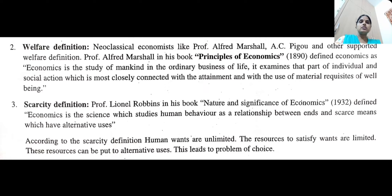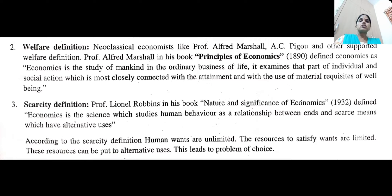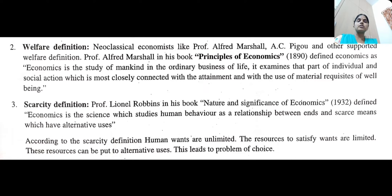According to Alfred Marshall, he defined economics in his book Principles of Economics published in 1890. He defined economics as: 'Economics is the study of mankind in the ordinary business of life. It examines that part of individual and social action which is most closely connected with attainment and with the use of material requisites of well-being.' According to Alfred Marshall, economics is the study of mankind in the ordinary business of life — that is, it studies about human beings in the ordinary business of life.